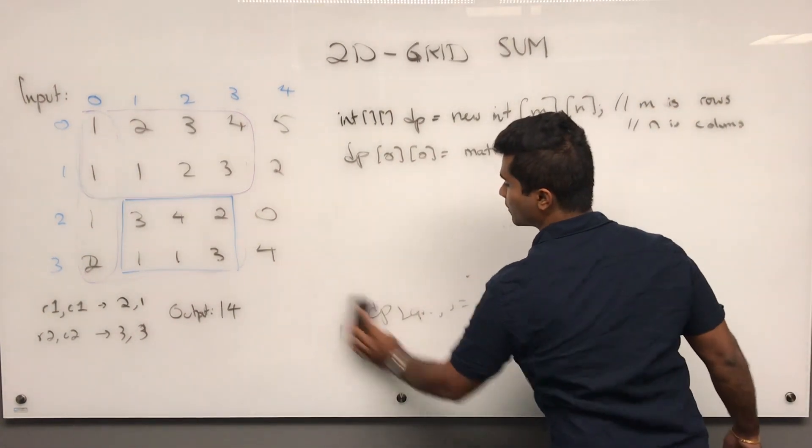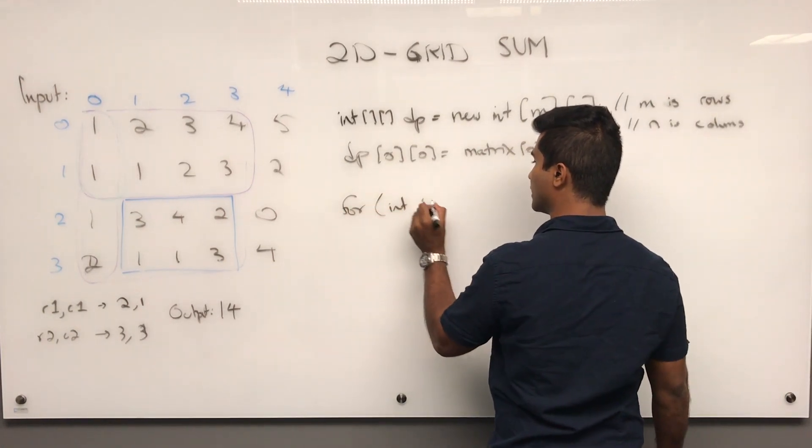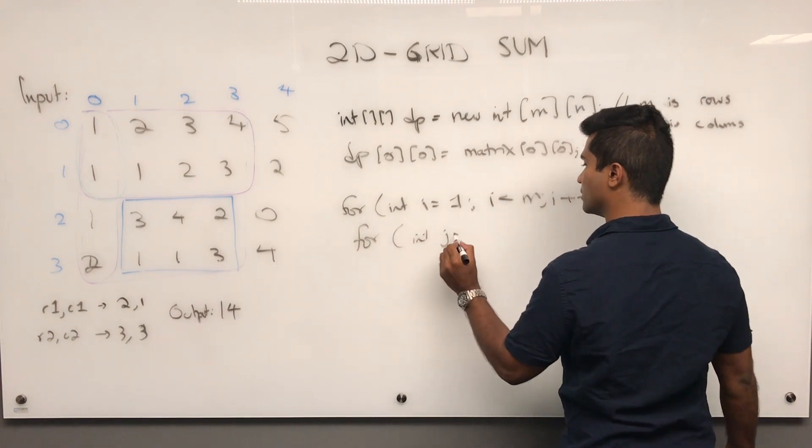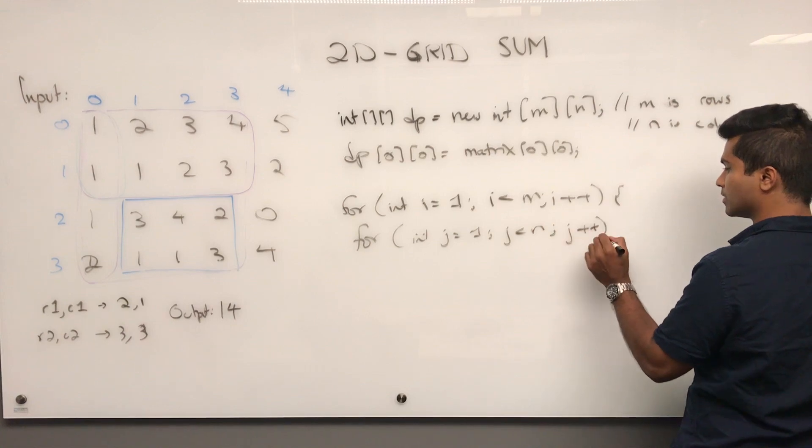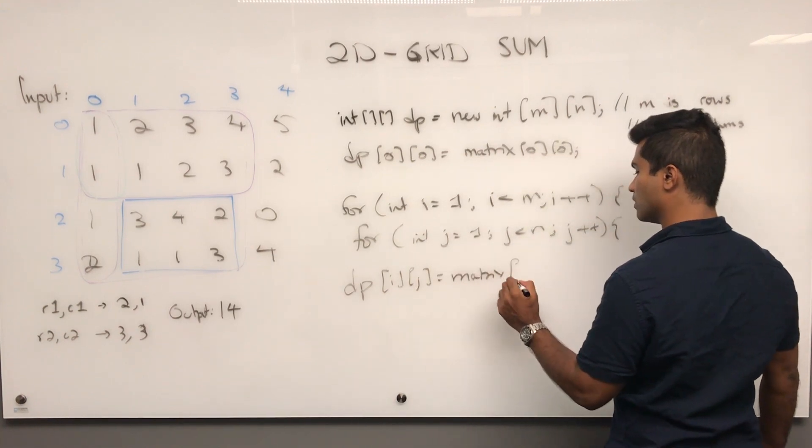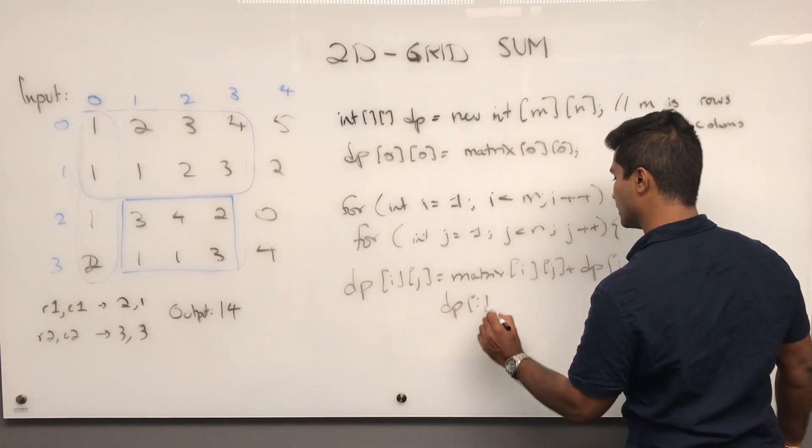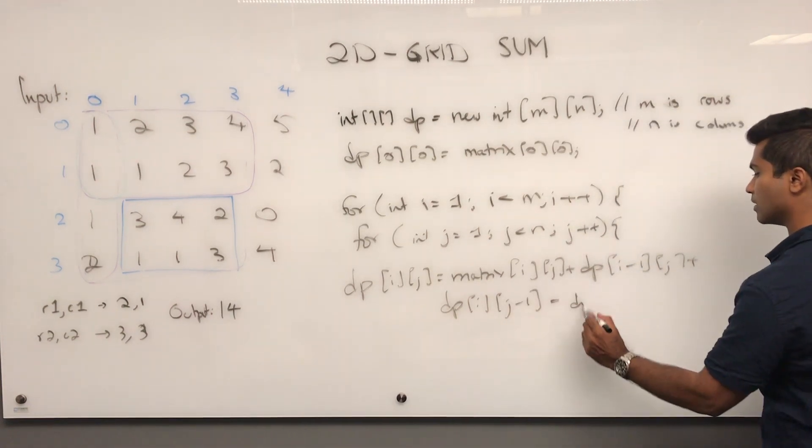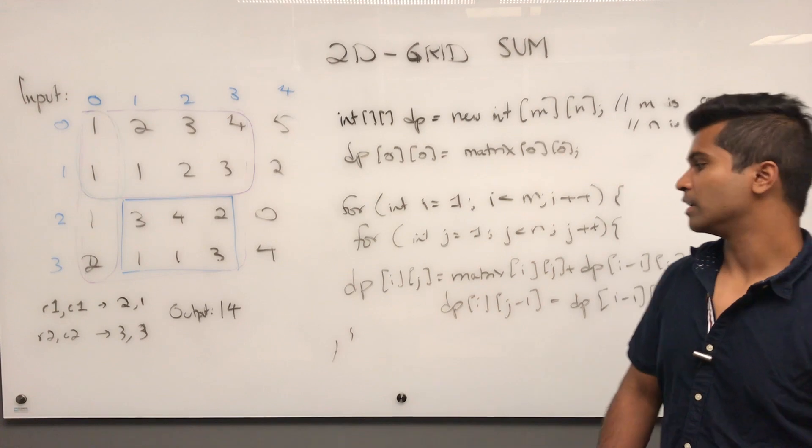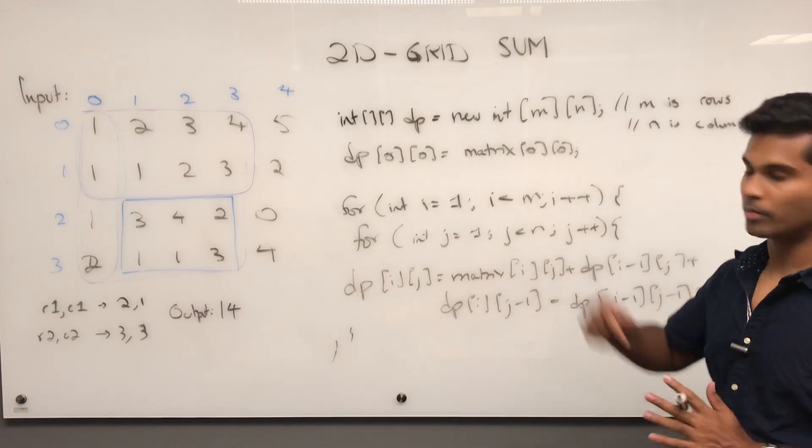So that is going to populate the top and left of the grid. Now let's calculate the core of the DP grid. DP of I of J is going to be matrix of I of J plus DP of I minus 1 and we take away one behind it. Now don't confuse this part with the geometry I showed you earlier. We're going to use the DP to work with the geometry trick. So this is all used to just populate the DP array I was calculating earlier.